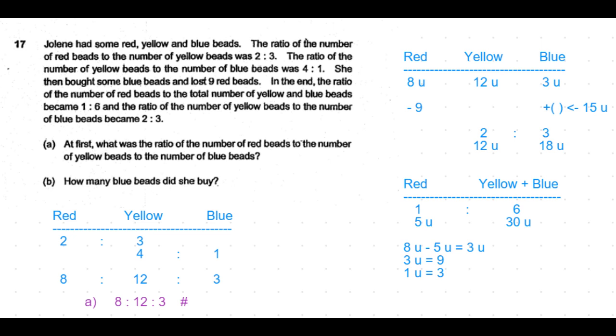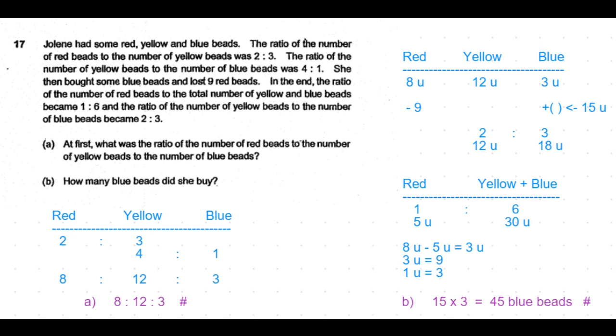We now use this 1 unit equal to 3 back in the number of blue beads which she bought which is equal to 15 units is equal to 15 times 3 is equal to 45 blue beads. That's the number of blue beads she has bought. That's the answer for part B of the question.